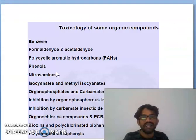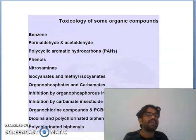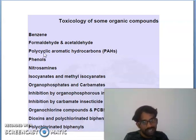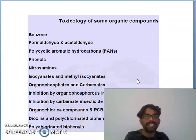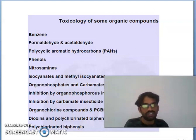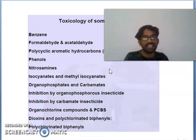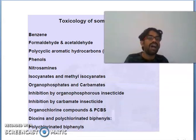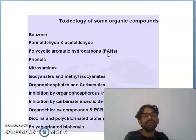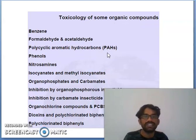What are the toxicities of some organic compounds? These include benzene, formaldehyde, acetaldehyde, polycyclic aromatic hydrocarbons, phenols, nitroamines, nitrosamines, isocyanides, methyl isocyanate, organophosphates, carbonates, and related inhibitors. These are some of the toxic organic compounds. Be aware of and learn about these compounds.